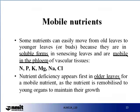Plant nutrients can be characterized according to their ability to move within the plant. Some nutrients can move easily, for example from old leaves to younger leaves or from old leaves to buds, and these are considered mobile — that is, they are mobile in the phloem of the vascular tissues. Examples of mobile nutrients include nitrogen, potassium, phosphorus, magnesium, sodium and calcium. Nutrient deficiency appears first in the older leaves for these nutrients, because the nutrient is remobilized to the young organs to maintain their growth.